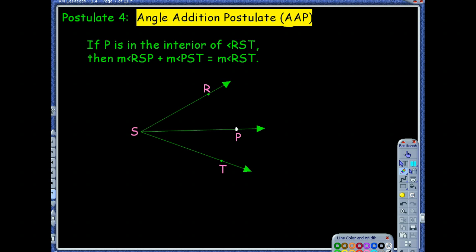This says that if P is in the interior of an angle, so P is some point that's somewhere inside of that angle, then if I look at the angles that are formed using that P as one of their sides, say RSP and PST, those two angles together, their measures do equal the measure of the larger angle that you started with, RST.